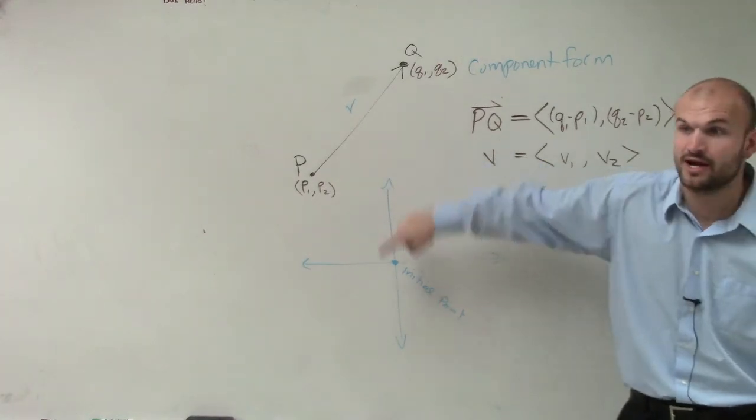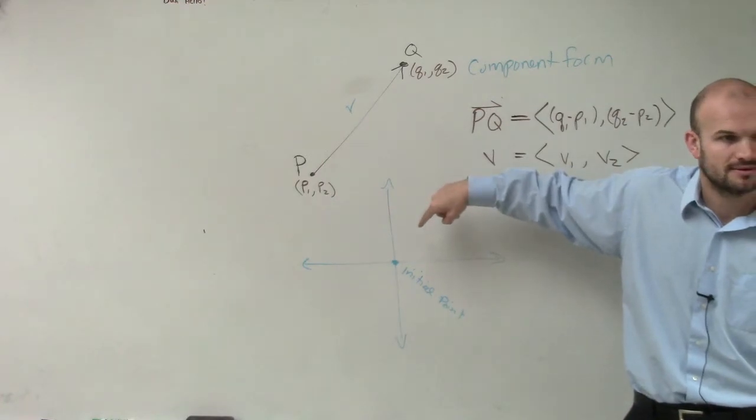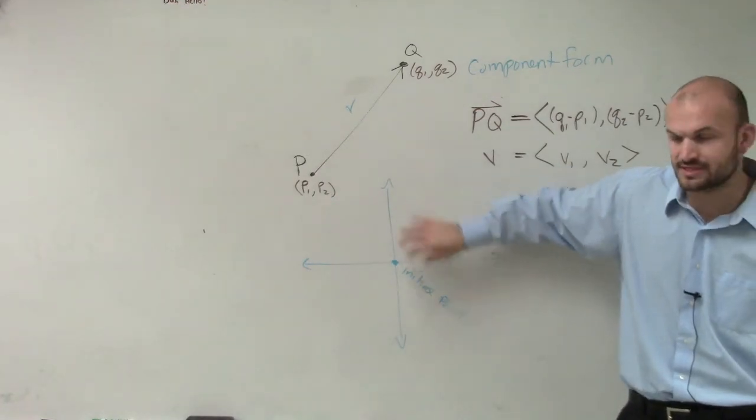So since they're equal, if they all have the same initial point, they're all going to have the same terminal point. Does that make sense? That's why it's helpful to standardize this.